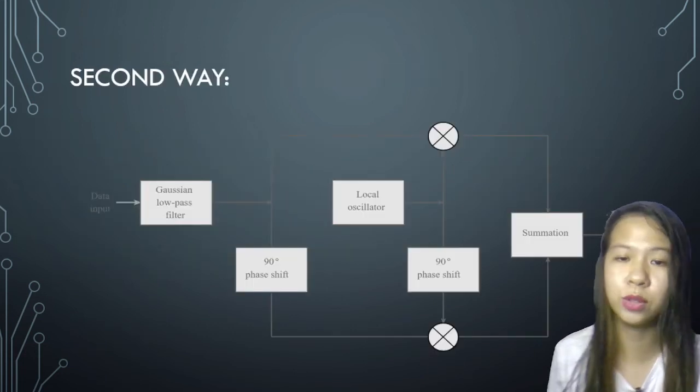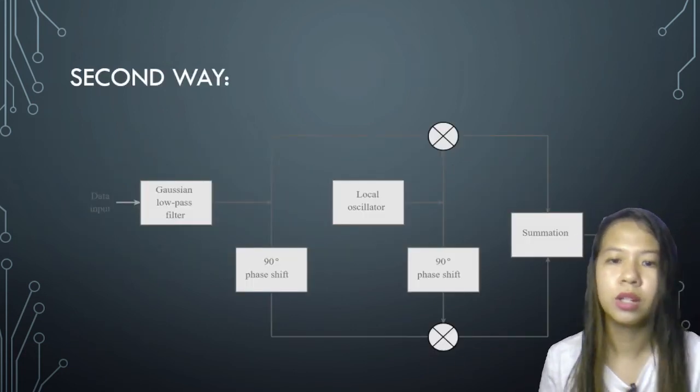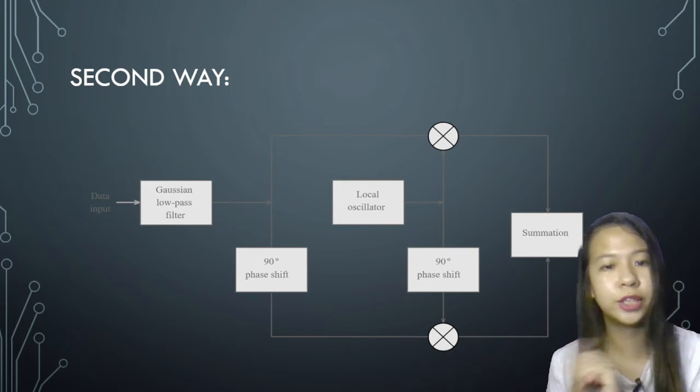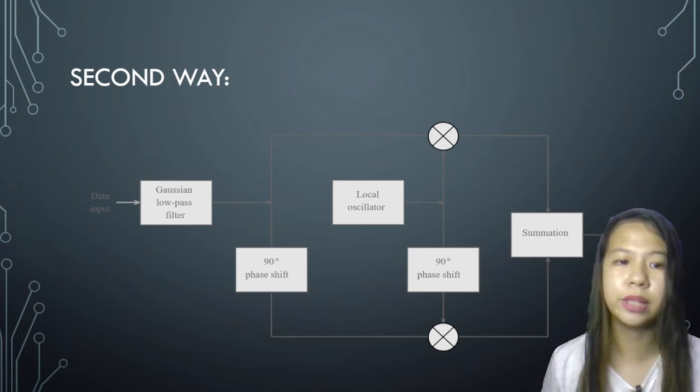So here is the picture of the second way. Here we can see the data input goes to Gaussian low pass filter, then the 90 degree phase shift, the local oscillator, 90 degree phase shift, then the summation.